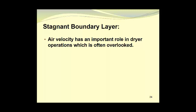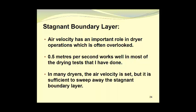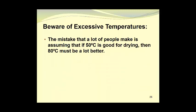Air velocity has an important role in dryer operations, which is often overlooked, and this is particularly important when it comes to the stagnant boundary layer. 0.5 meters per second of air flow works well in most of the drying tests that I have done in removing the stagnant boundary layer. In many dryers, such as the home food dehydrators that you may buy, the air velocity is set by the manufacturer, but it is sufficient to sweep away the stagnant boundary layer.